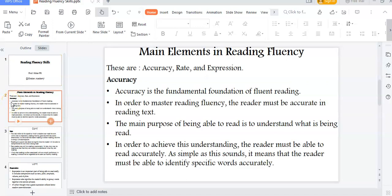There are three elements of reading fluency: accuracy, rate, and expression. I want to begin by looking at accuracy.